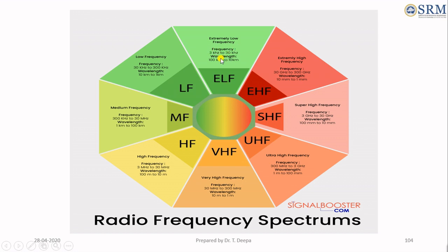Extremely low frequency has a wavelength from 100 kilometers to 10 kilometers. Low frequency ranges from 30 kilohertz to 300 kilohertz, wavelength from 10 kilometers to 1 kilometer. High frequency ranges from 3 megahertz to 30 megahertz, wavelength from 10 meters to 100 meters. Very high frequency ranges from 30 megahertz to 300 megahertz, wavelength from 10 meters to 1 meter. Ultra high frequency ranges from 300 MHz to 3 GHz, wavelength from 1 meter to 100 mm. Super high frequency ranges from 3 GHz to 30 GHz, wavelength from 100 mm to 10 mm.